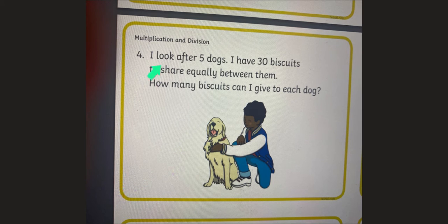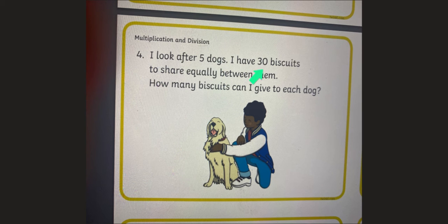These questions are division questions. That means we're going to do some sharing and we're going to share amounts equally. Let me show you one first. The question says: I look after five dogs. I have 30 biscuits to share equally between them. How many biscuits can I give to each dog? So I'm going to need to draw five dog bowls and share 30. Let me show you how.